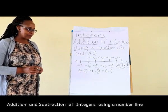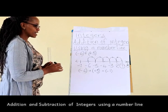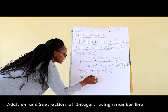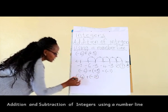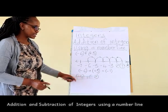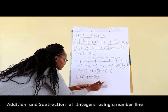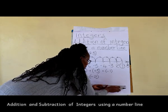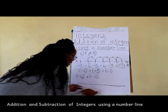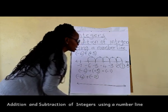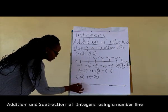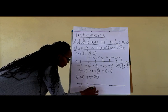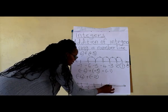Let us also consider adding a negative integer: negative 4 plus negative 2. We have negative 4 plus negative 2. Let's draw a number line. Our number line includes negative 7 through negative 3, so we have negative 7, negative 6, negative 5, negative 4, negative 3.